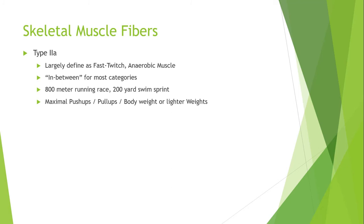For all intents and purposes, Type 2A muscle fiber is very much in between Type 1 and Type 2X. It is more defined as fast twitch and lives in the anaerobic category. You obviously can't do push-ups forever, which is why it's anaerobic — you'll eventually need rest to replenish that anaerobic system. But it sits in between Type 1 and Type 2X.